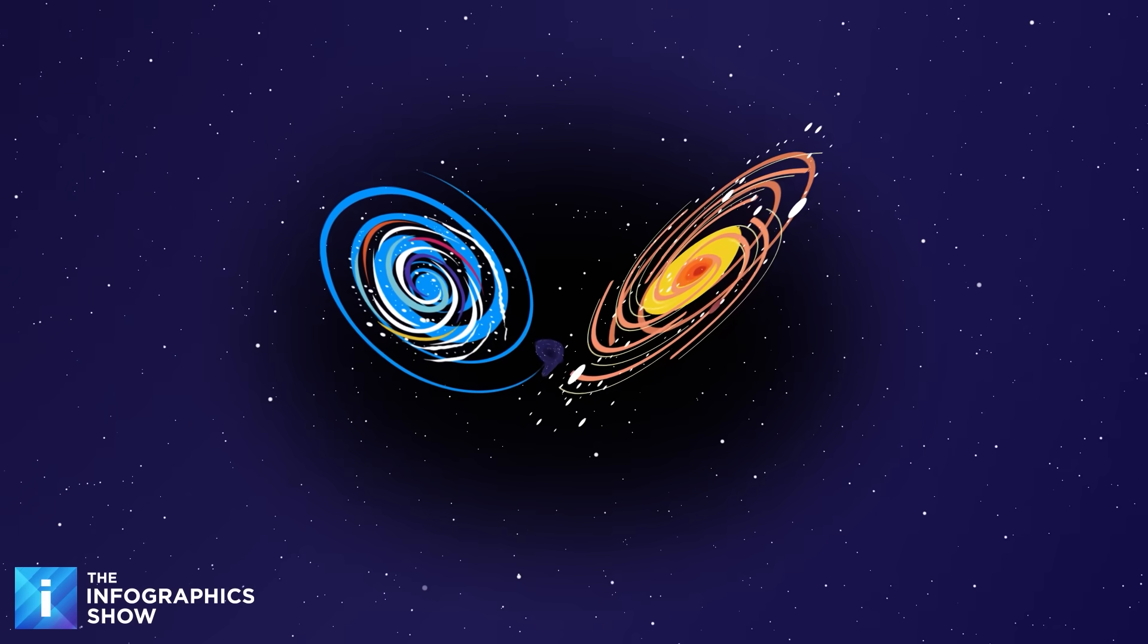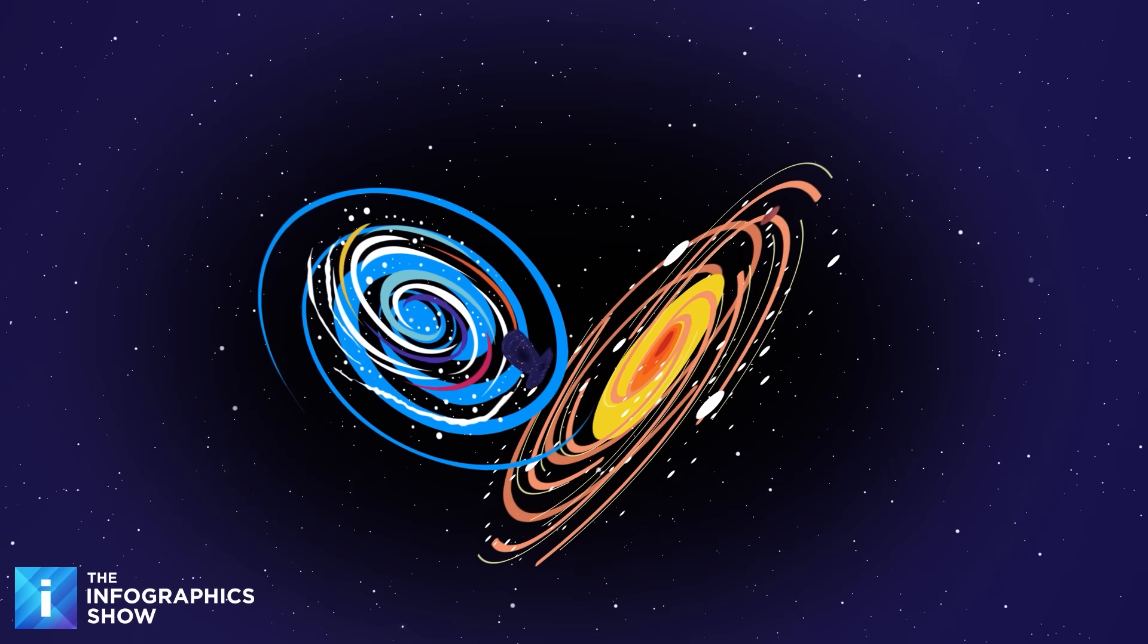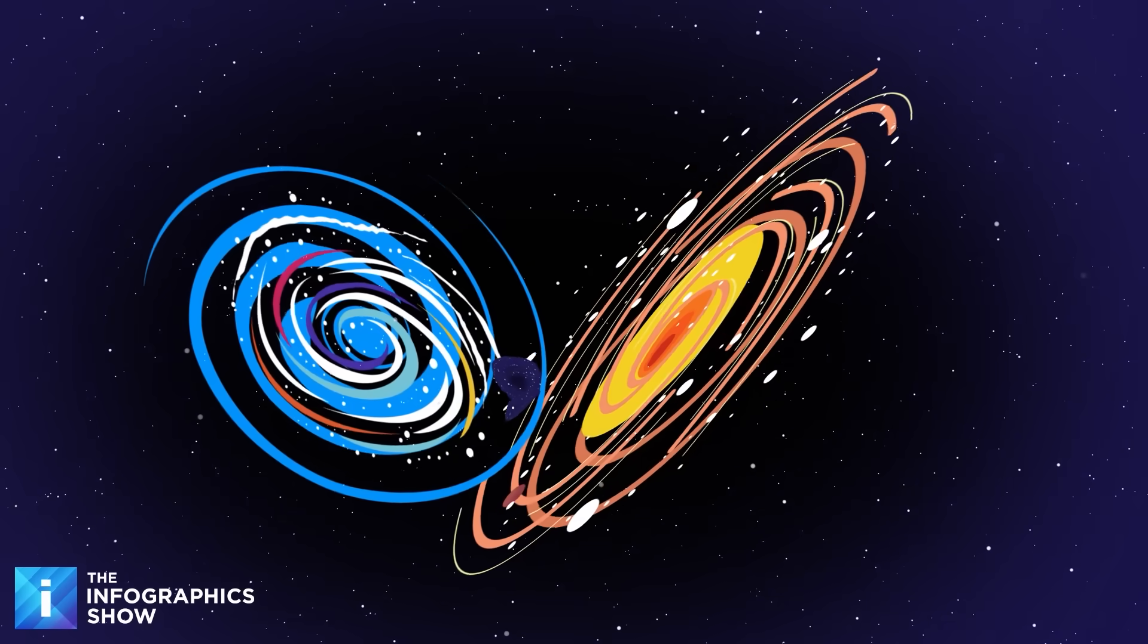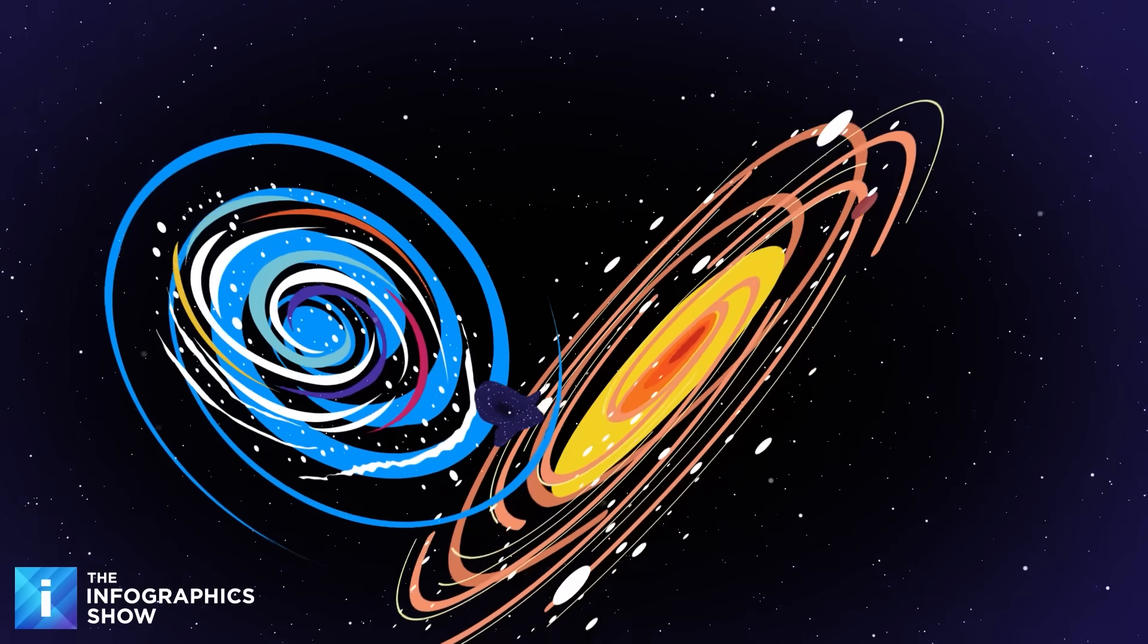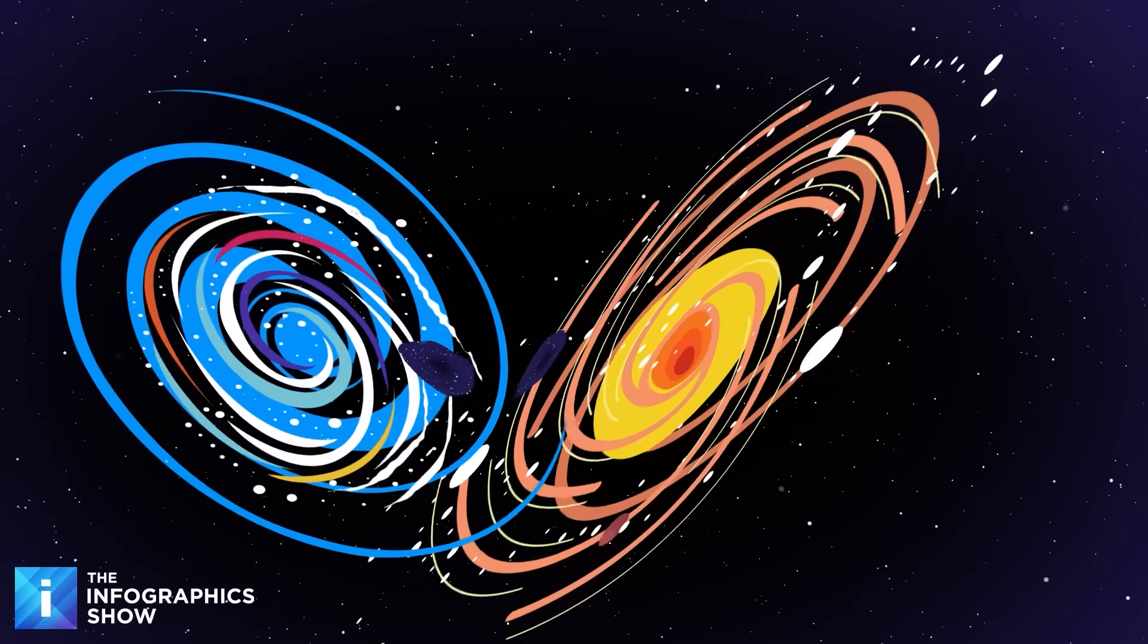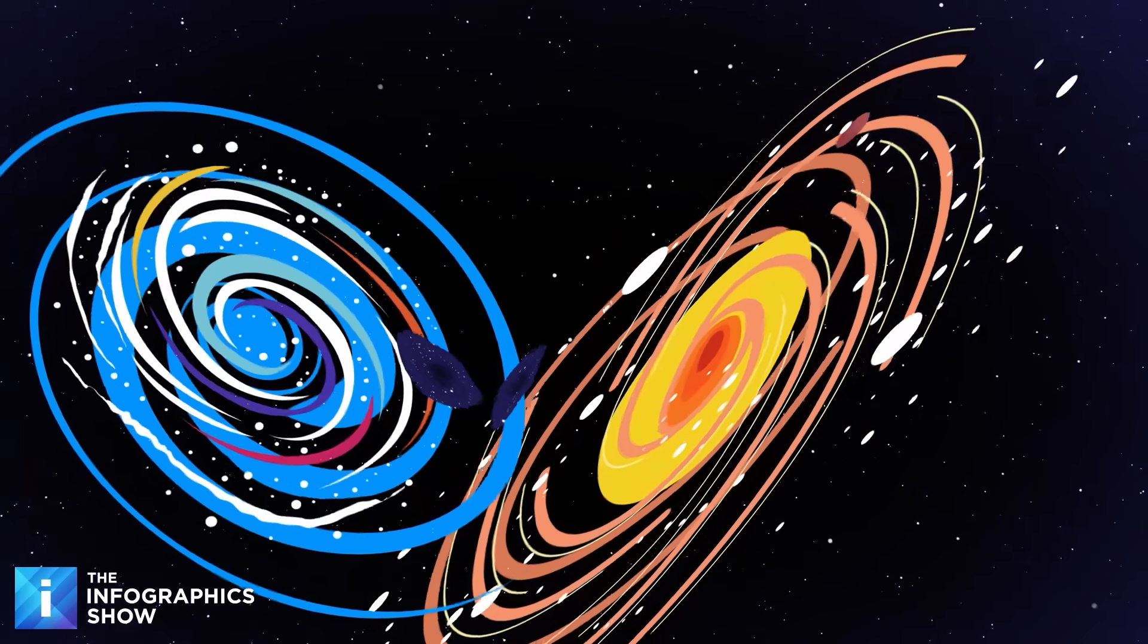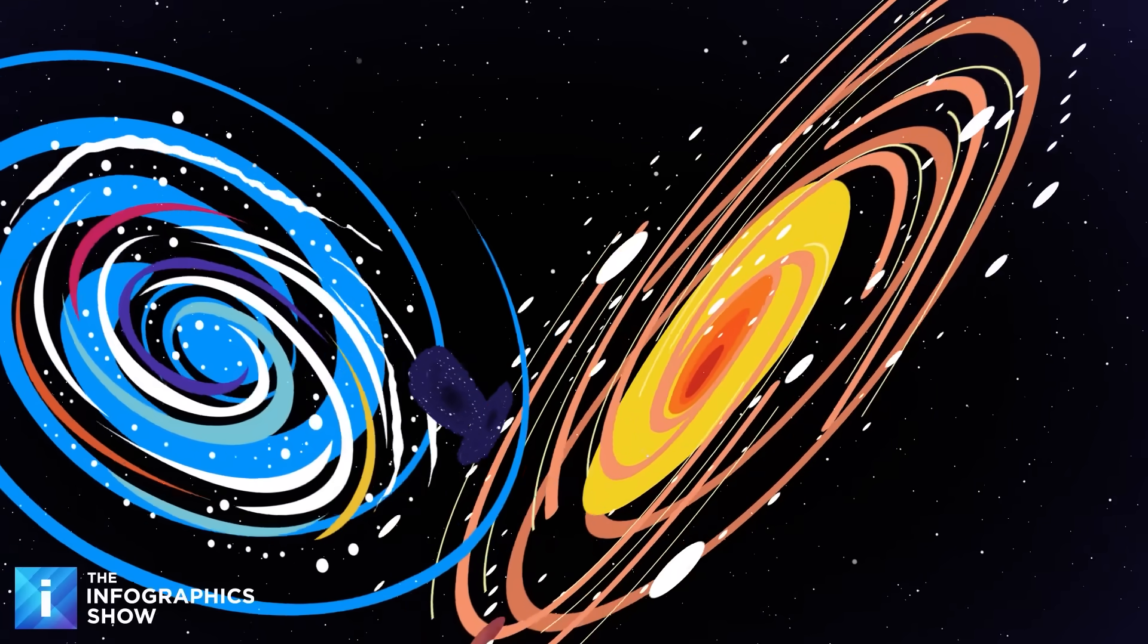Over the next billion years, the pace picks up. Galaxy collisions become more common as cosmic expansion slows the most distant objects while the nearby galaxy clusters continue their gravitational dance. When galaxies merge, their central supermassive black holes eventually spiral into each other, creating even more monstrous entities. The Milky Way's scheduled collision with Andromeda in four and a half billion years will be just the beginning.